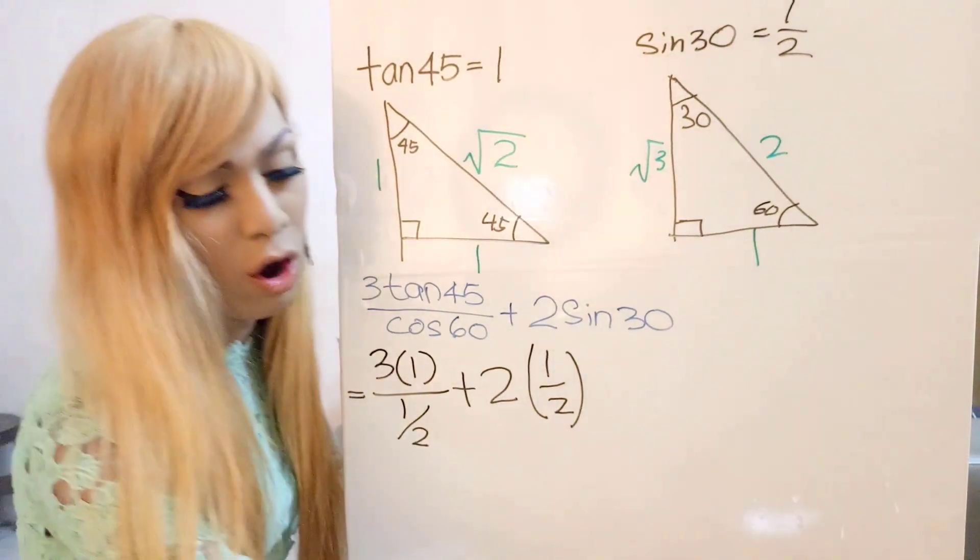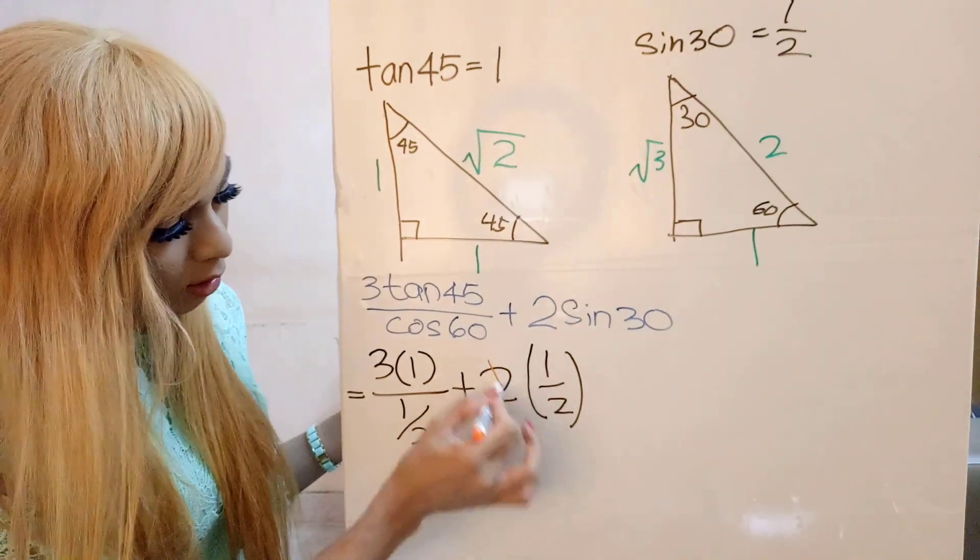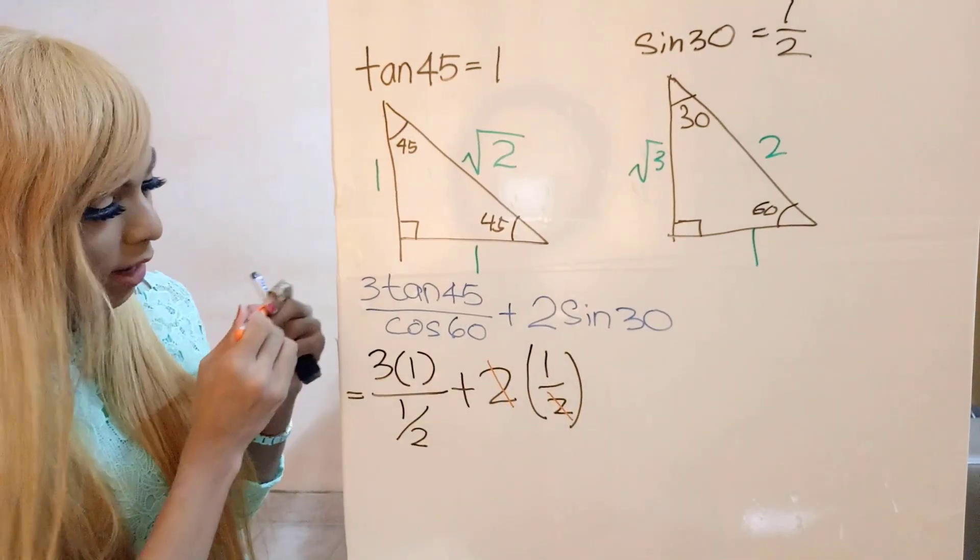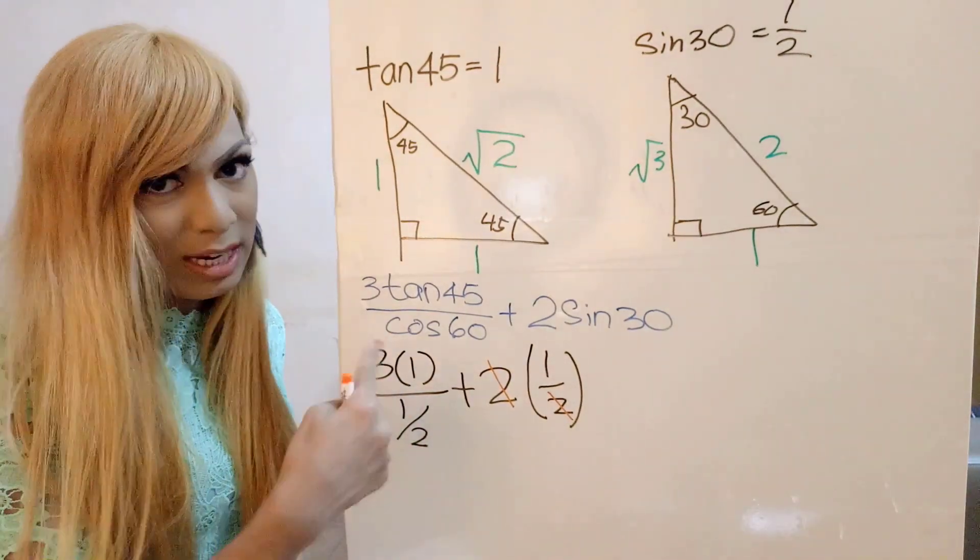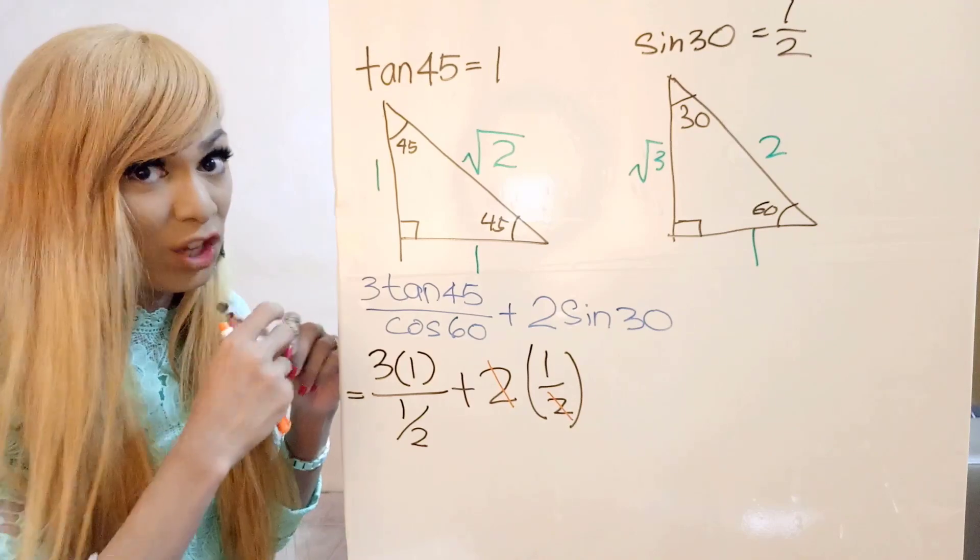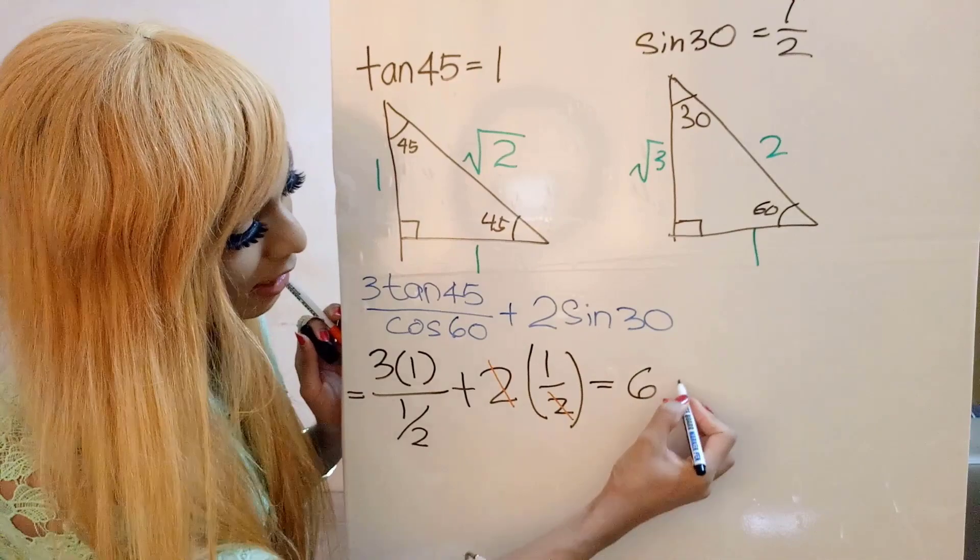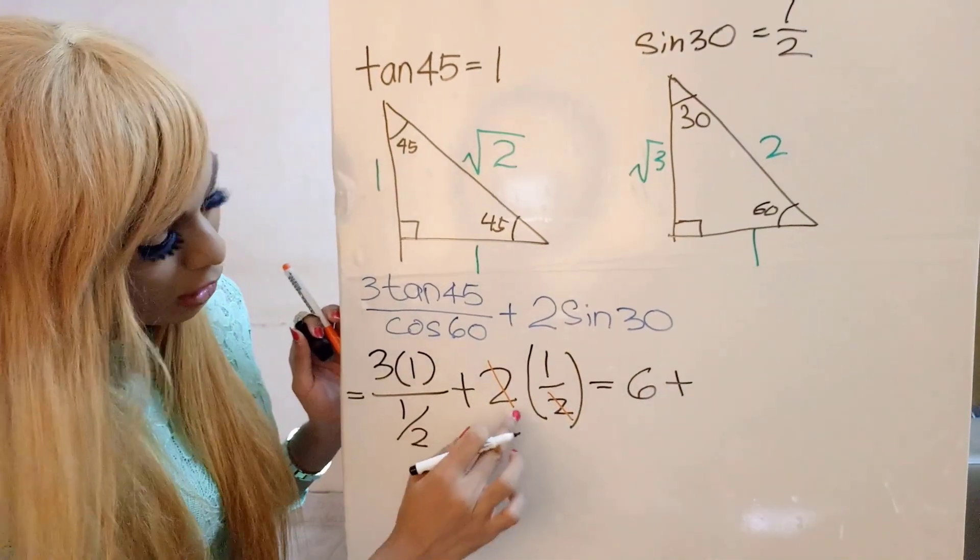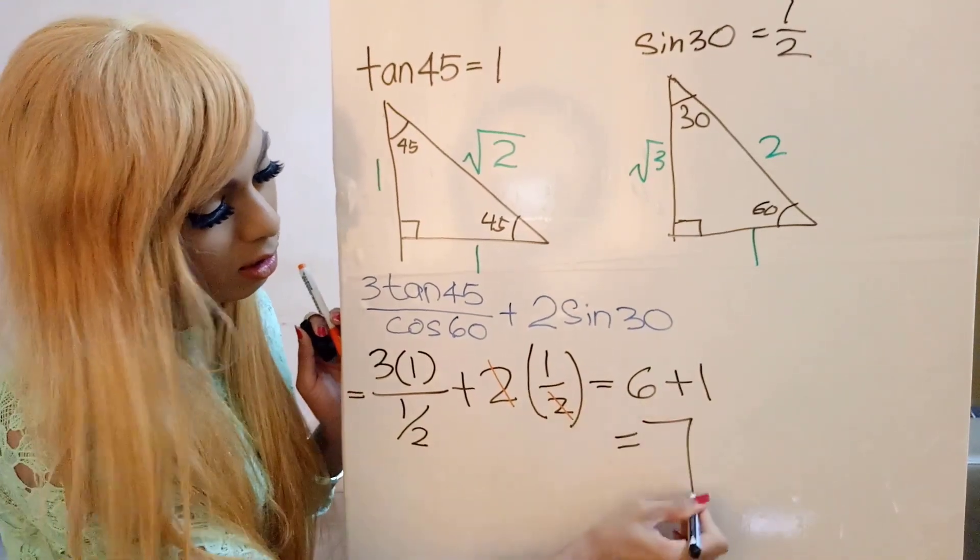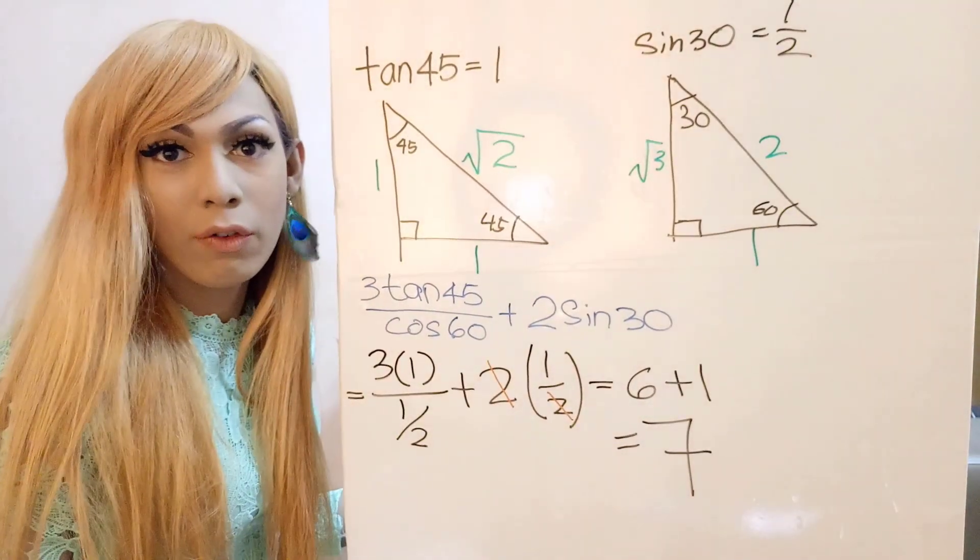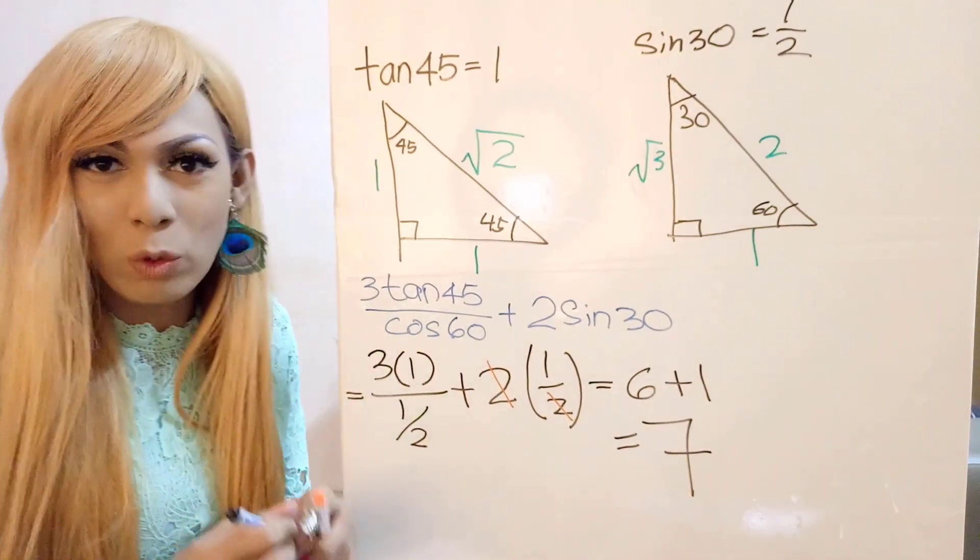So we can cut off the things that is able to cut off. So it becomes 1. Over here, 1 over 2. And then the 2, we bring it up. Then 3 times 2, it's going to be 6. So I will have 6 plus this is 1. Then we have the answer, 7. So now, let's go to question number 2.